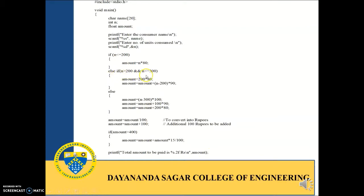If not, if the number of units consumed fall in the range of 200 to 300 — suppose the units consumed are 250 — then for the first 200 units it is 200 into 80, and for the remaining additional 50 units it is 50 into 90. Hence this total amount will again be printed as output.